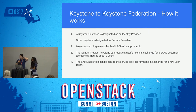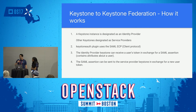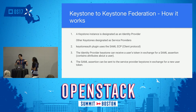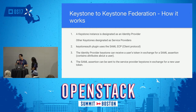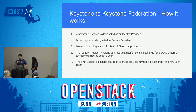We have multiple Keystones — we designate one as the identity provider, where your users live, and the others as service providers, and we establish trust. The way we authenticate federated users is through the Keystone auth plugin, which uses SAML ECP in the background. The plugin takes the user's already-validated token and gives it to the identity provider. That identity provider Keystone returns a SAML assertion, which the auth plugin then provides to the service provider Keystone. Because trust is established, the service provider trusts those attributes and authenticates the user based on that assertion.